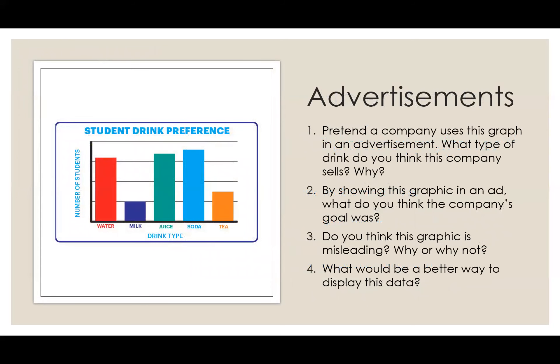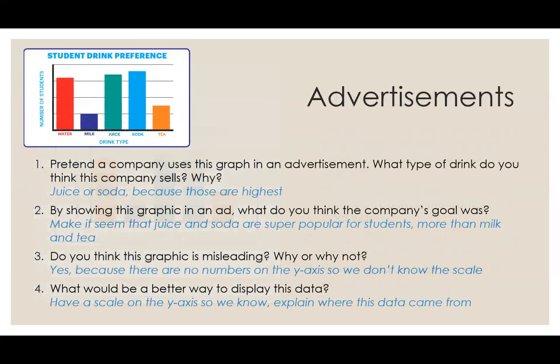The next one we're going to look at, we can assume this is an advertisement. Pretend a company uses this graph in an advertisement. What type of drink do you think this company sells and why? If this was an ad, I would guess the company sells juice or soda. It definitely wouldn't be selling milk because if a company was selling milk, they would not want to show this graph — it looks like nobody wants to drink milk, but people do want to drink juice and soda.